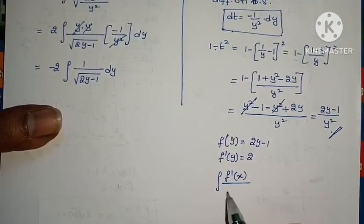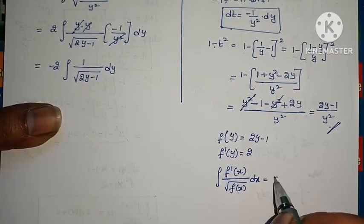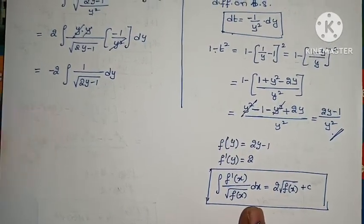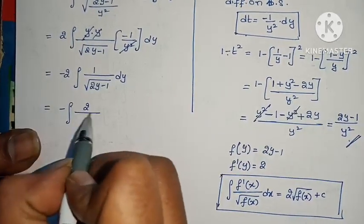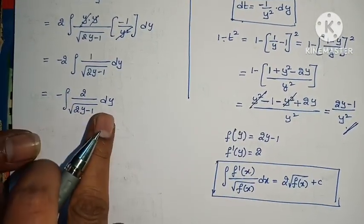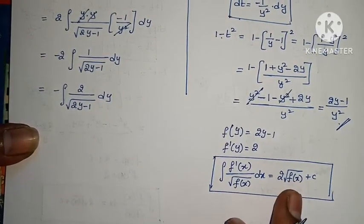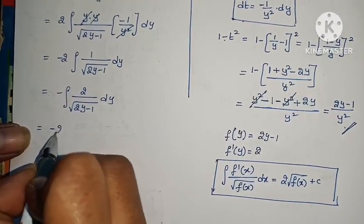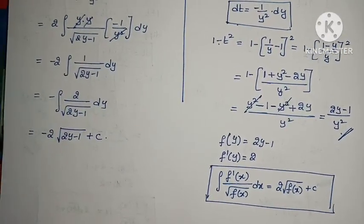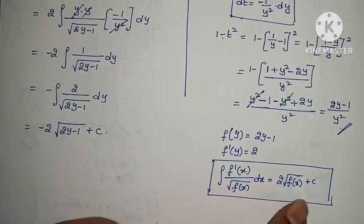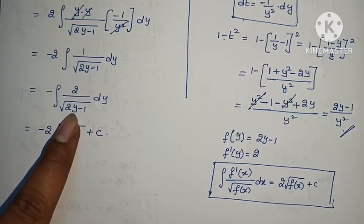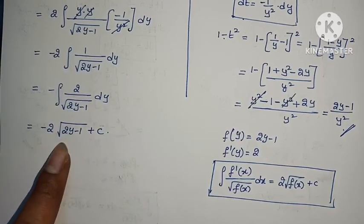Using the standard formula: integral of f prime x by root of f of x dx equals 2 root of f of x plus c. Applying this formula here with f of y equals 2y minus 1, so f prime of y equals 2, the result is 2 root of f of y, giving minus 2 root of (2y minus 1) plus c.